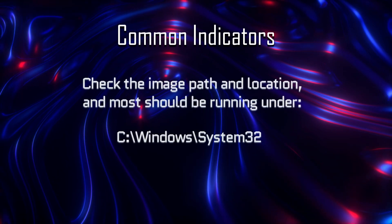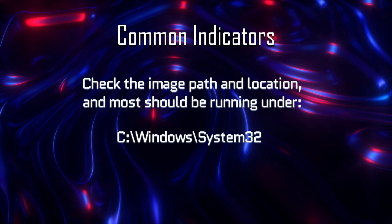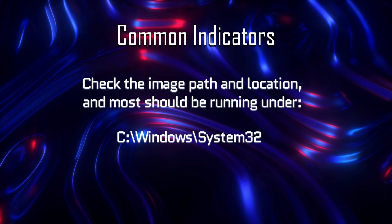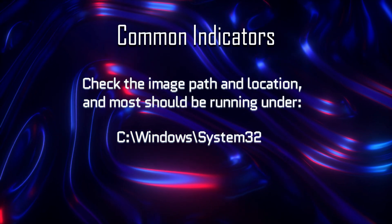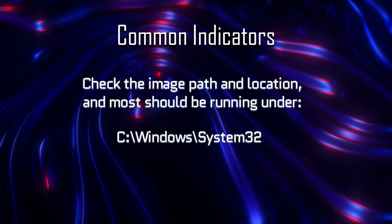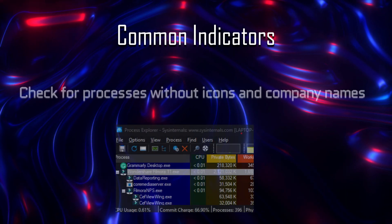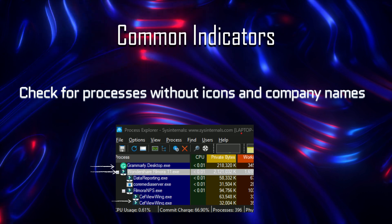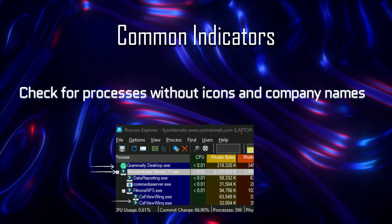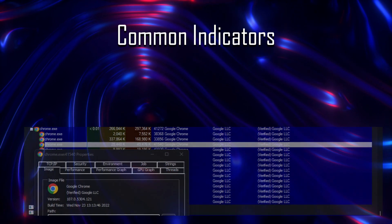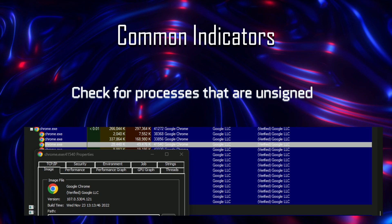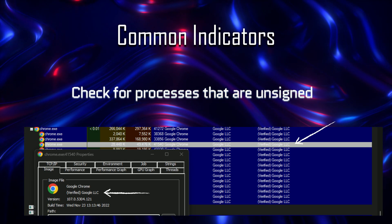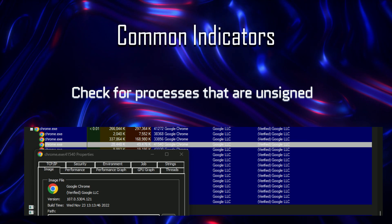Make sure to check the image path and location. Most of these Windows processes should be running under System32. If you have a Windows process running out of the Downloads folder, that's pretty suspicious. Check for processes that lack an icon or company name — processes outside of Windows will also have icons and company names. Check for processes that are unsigned, especially if it's from a well-known company like Microsoft, and validate these signatures to make sure that they match the identified publisher.